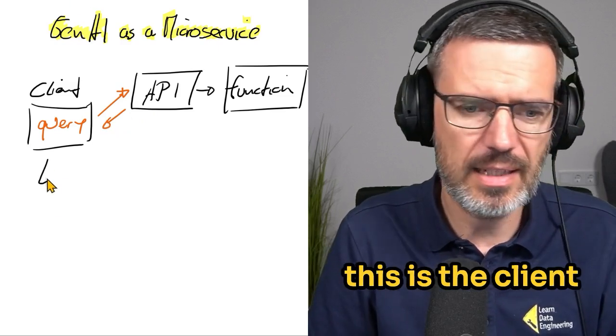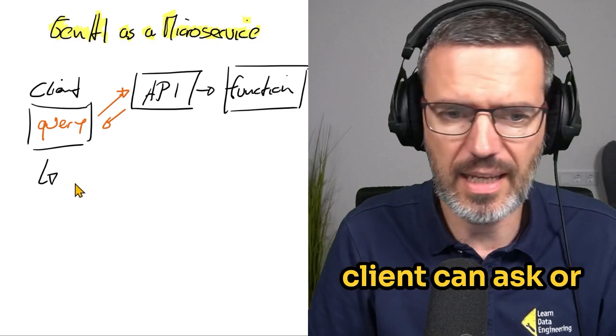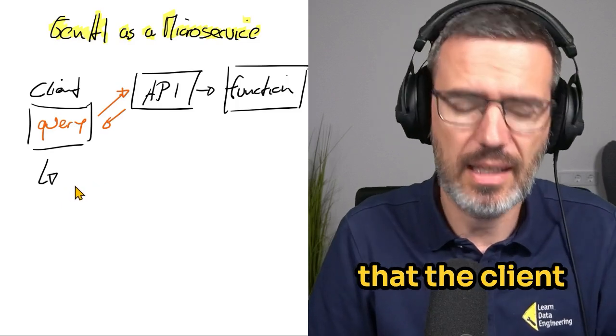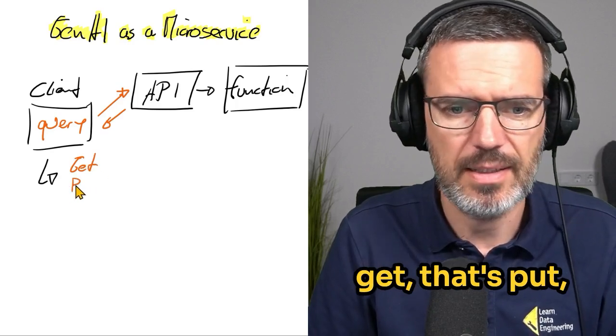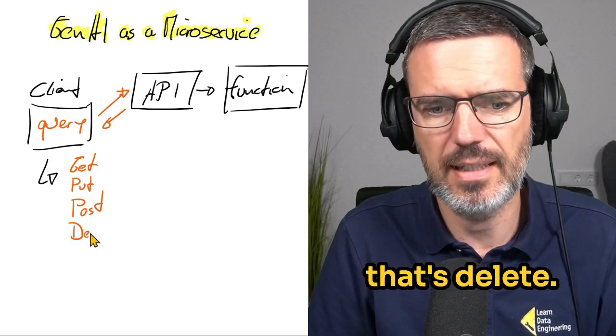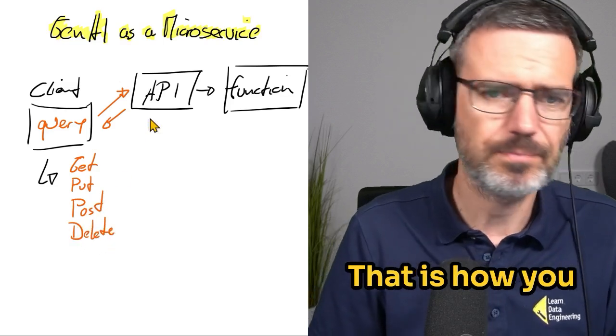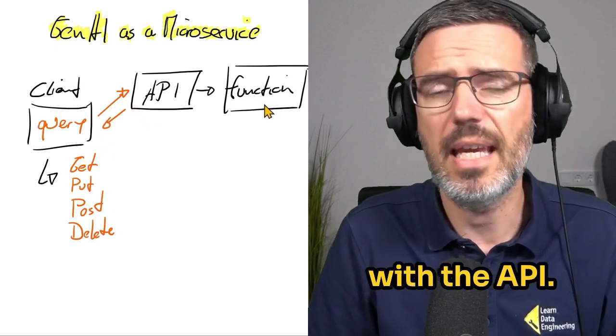So the idea with this is the API has a few methods that the client can query. Usually that's GET, that's PUT, that's POST, and for instance, that's DELETE. That is how you communicate with the API.